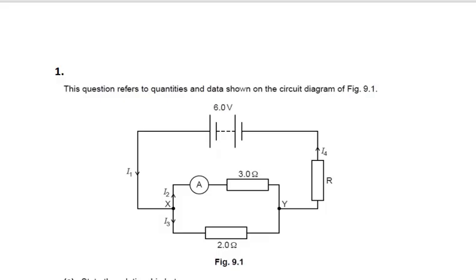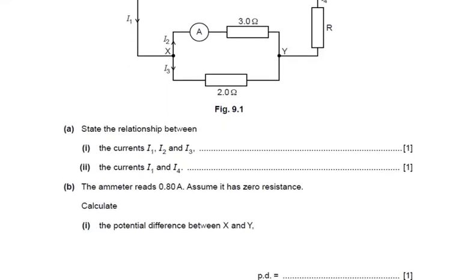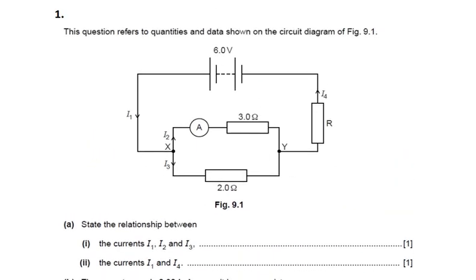Hi, welcome to my YouTube channel, this is GCT Tutor. Today I'm going to walk through some IGCSE questions and I hope this video will help you. Let's start with question 1. This question refers to quantities and data shown on the circuit diagram of figure 9.1. State the relationship between the currents i1, i2, i3, and also between i1 and i4.